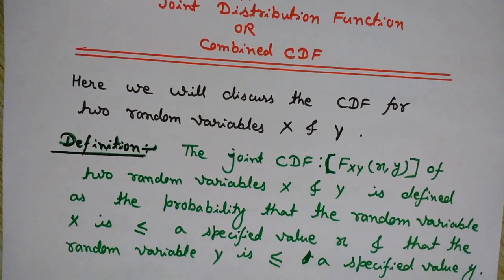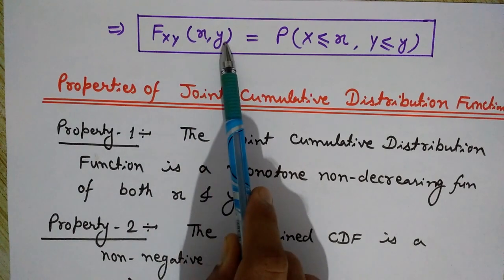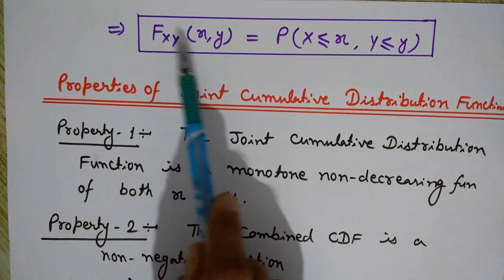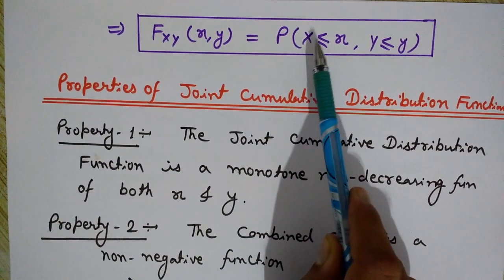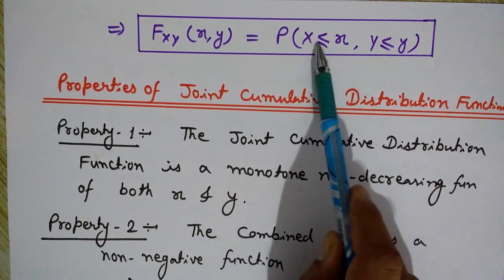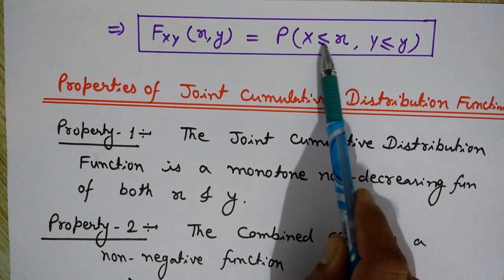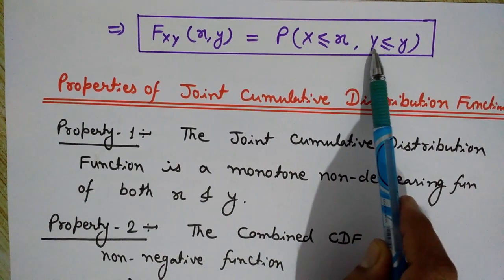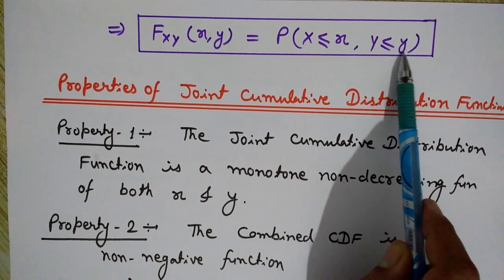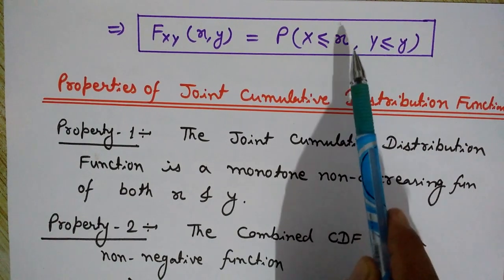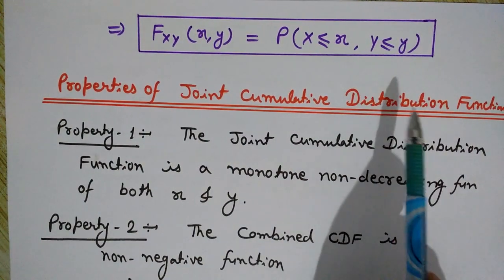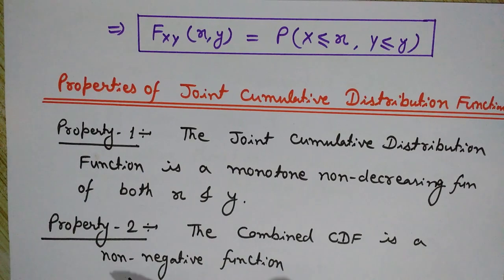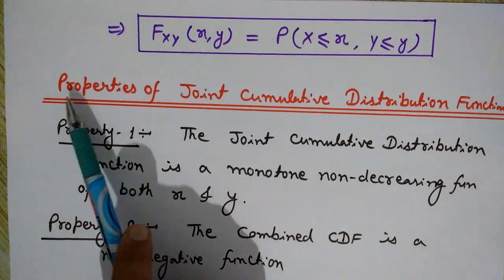Mathematically, the joint CDF is written as F_XY(x, y) equals the probability that random variable X is less than or equal to x and random variable Y is less than or equal to y. This is the mathematical notation for the definition of the combined CDF, or the joint cumulative distribution function.